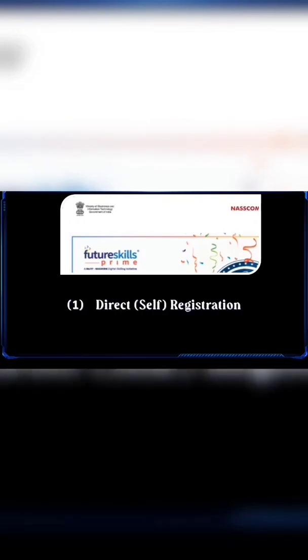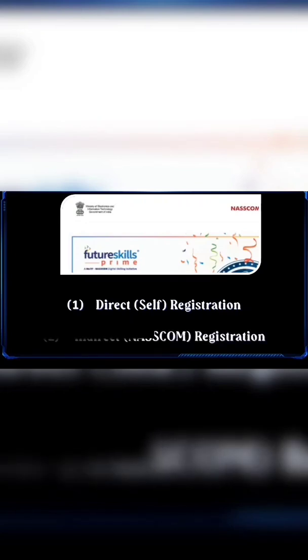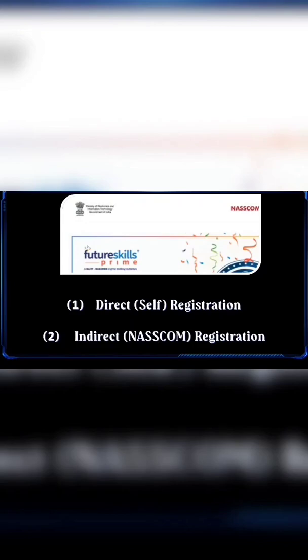Now let us see how to register for the portal using the mobile app in this video. Registration to NASSCOM's Future Skills Prime portal can happen in two ways: one is direct registration where students register themselves by choosing the fresh registration option, and another is registration by NASSCOM officials who collect data from the university and register on behalf of the students.